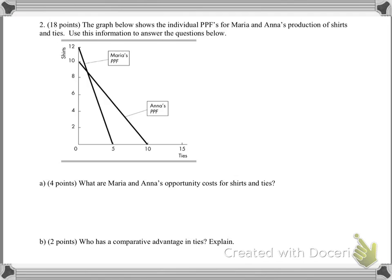So now we're going to go over PPFs, or production possibility frontiers, to answer these questions. So Maria and Anna are producing shirts and ties. The way to determine the opportunity cost, first, let's start with Maria. The maximum she can produce is 12 shirts. You can tell by, if she produces zero ties, she can produce 12 shirts. And the maximum amount of ties she can produce are five ties. With Anna, you have her maximum amount of ties she can produce is 10, and her also, the maximum amount of shirts she can produce is 10.